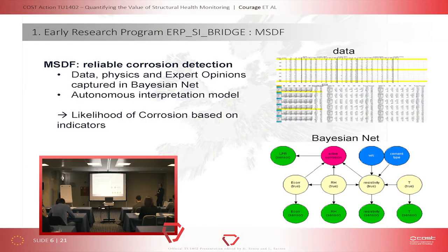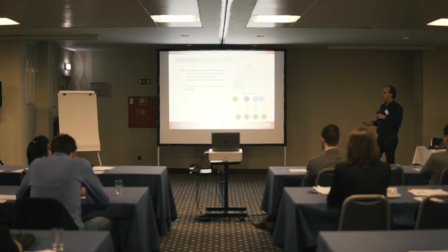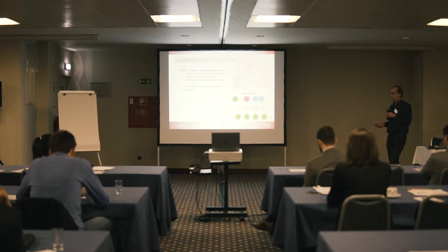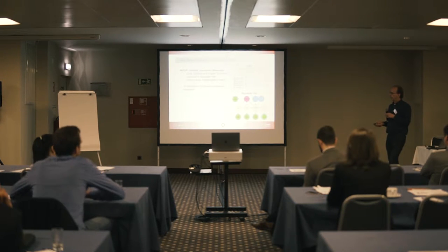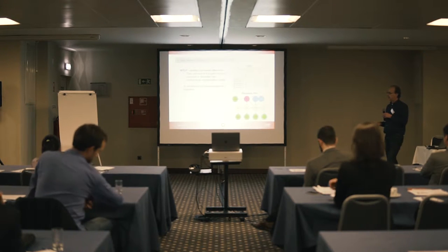We then use physical and statistical models to capture the relations and come not only with sensible use, but also with an autonomous interpretation model. We have data, physics and expert equations, and all this knowledge is then captured in a Bayesian network, which then behaves as an interpretation model for the sensor values, and gives as a result the likelihood of corrosion based on all the indicators.